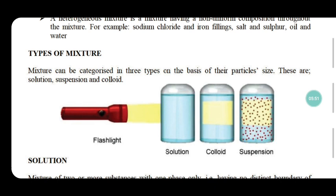Thirdly, fill some starch solution in a beaker and keep it on the lab table. After 20 minutes, observe the three mixtures. From the first beaker, nothing is visible. From the second beaker, we can see a separate layer — a layer of water and a layer of soil. In the third beaker, particles are somewhat visible but not clearly. So the first type is called a solution, the second a suspension, and the last one a colloid.